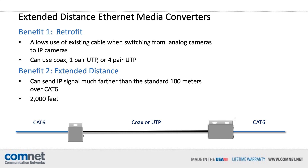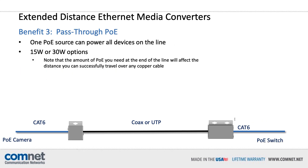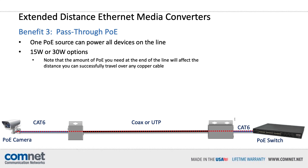Many extended distance Ethernet media converters can transmit an IP signal over 2,000 feet. The third benefit — a huge reason installers choose this type — is pass-through PoE, which allows one power source like a PoE switch to power all devices on the line. Power is transmitted from the PoE switch, powering both media converters and also passing power up to the camera at the end of the line. This makes for a much quicker installation and means you don't need to worry about finding power at the camera location. ComNet makes versions for up to 15 watts or 30 watts. Please note that the amount of PoE needed at the end of the line will affect the distances you can successfully travel over any copper cable, so consult our data sheets for specific limitations.